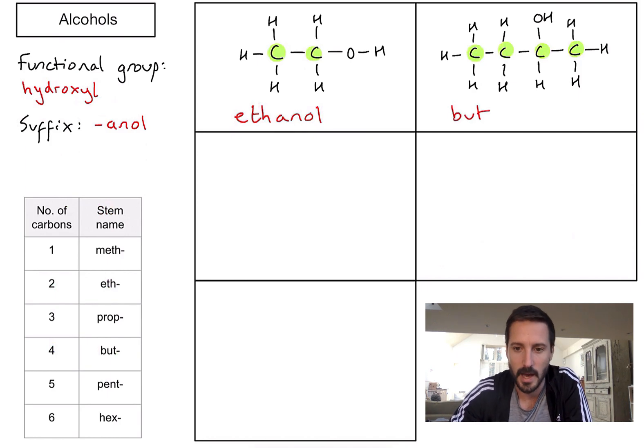Now instead of putting -anol on the end directly, because that hydroxide which currently is there could also be on an end carbon, we're going to need to put a little bit more detail about specifically where that hydroxyl group is. To do so, the mistake would be to label left to right and find it on the third carbon, because what we always need to do is label things so that my functional group is as close to the beginning of the chain as possible. So I'm going to label them from right to left: one, two, three, four.